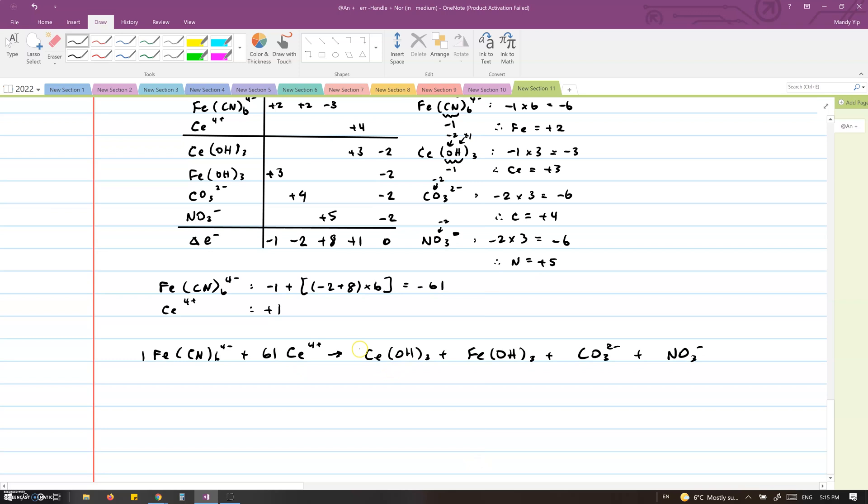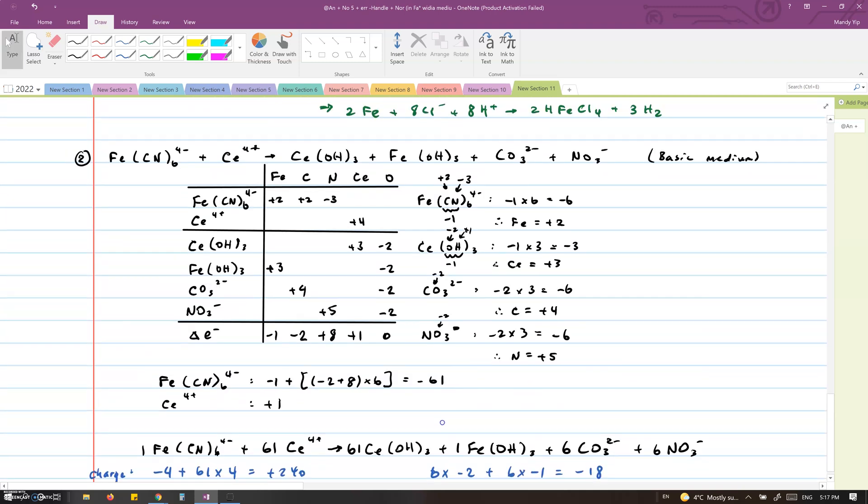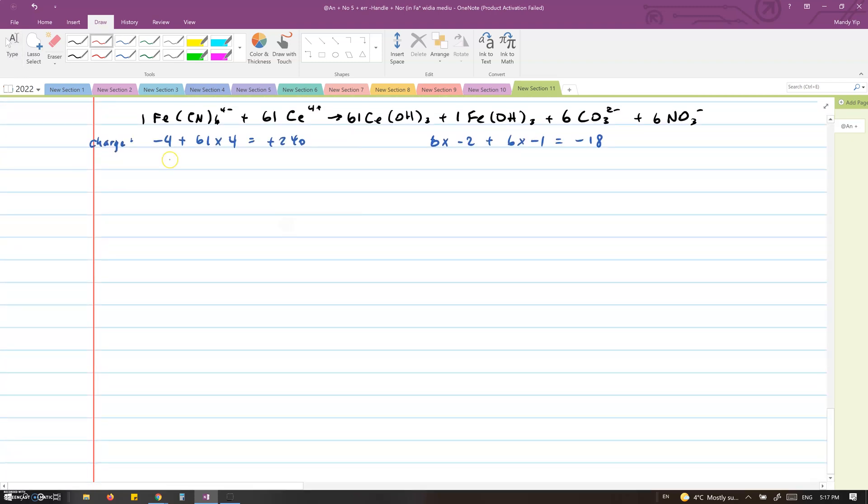We will now rewrite the equation with the swapped numbers of change in electron count as the coefficients. First, we will balance the non-oxygen and non-hydrogen elements. Next, we will balance the charge. We have to be very careful when counting because of these big numbers. This reaction takes place in a basic medium. We will add OH- instead of H+, like we did in the first example. Then we will balance the hydrogens and add waters to the right side. Lastly, we will check that the equation is balanced by counting the oxygens.